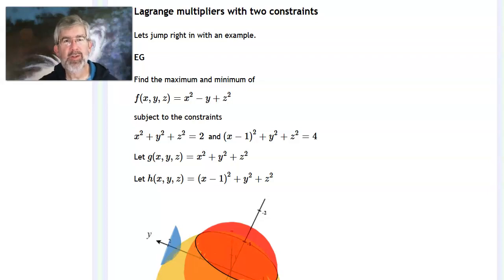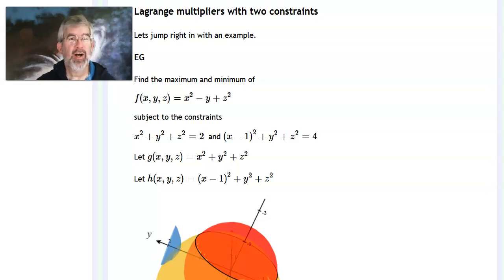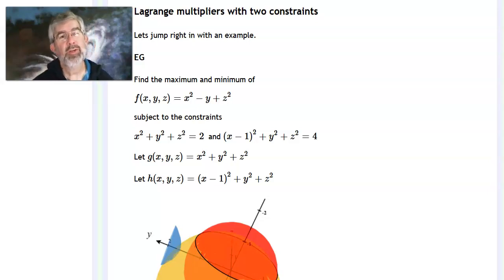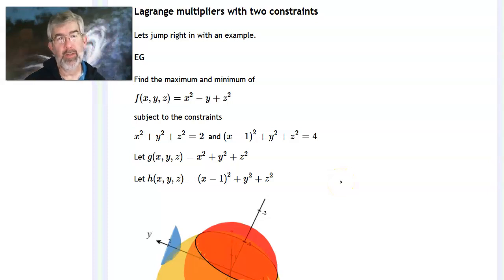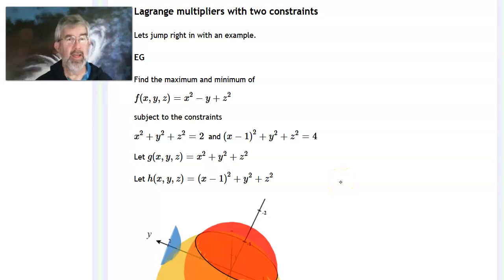In this video, I want to take a look at how we use Lagrange multipliers to maximize and minimize a function subject to two constraints. I'm going to do this by looking at an example and figuring out what it is we need to calculate, and then do those calculations.